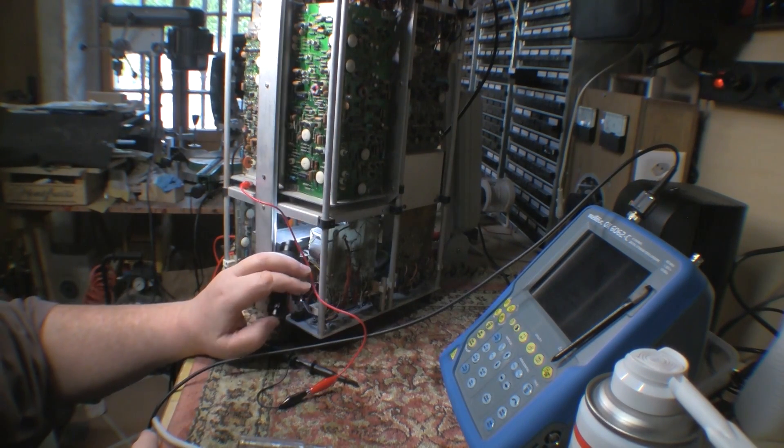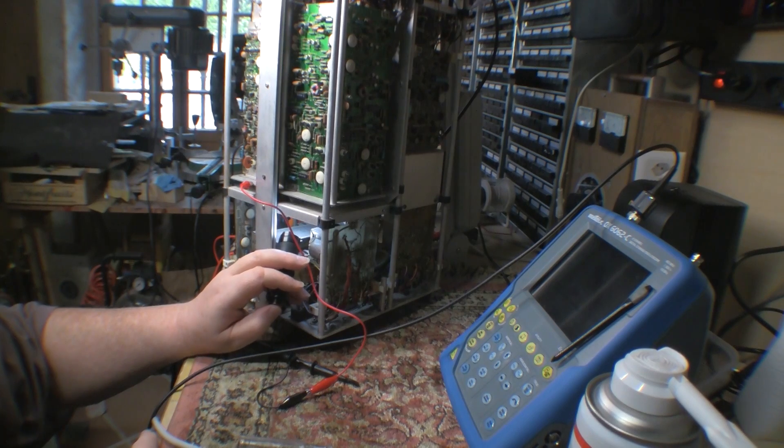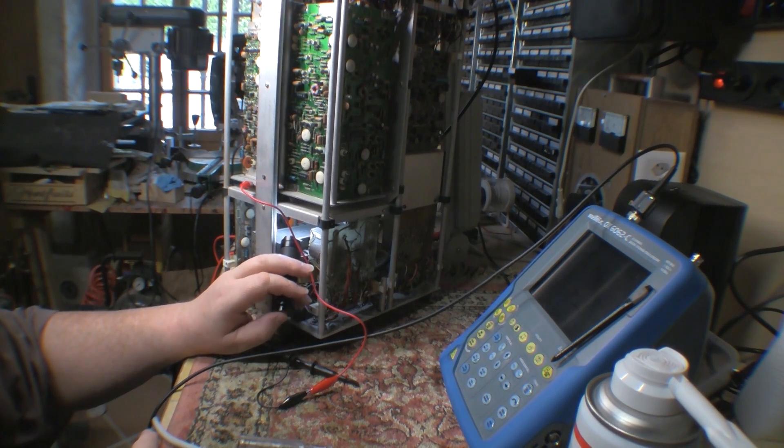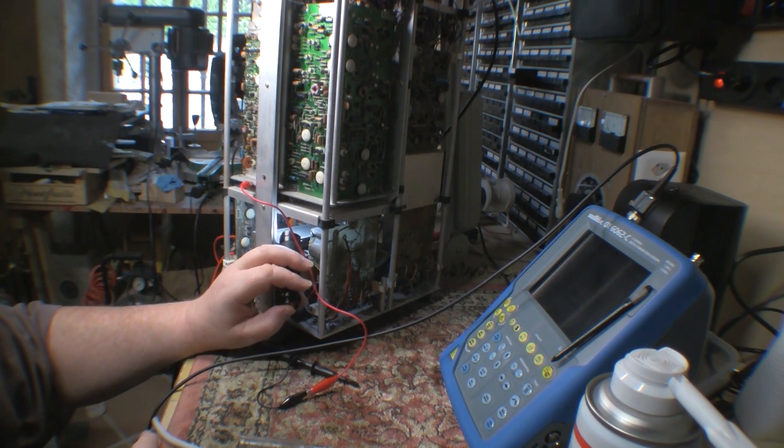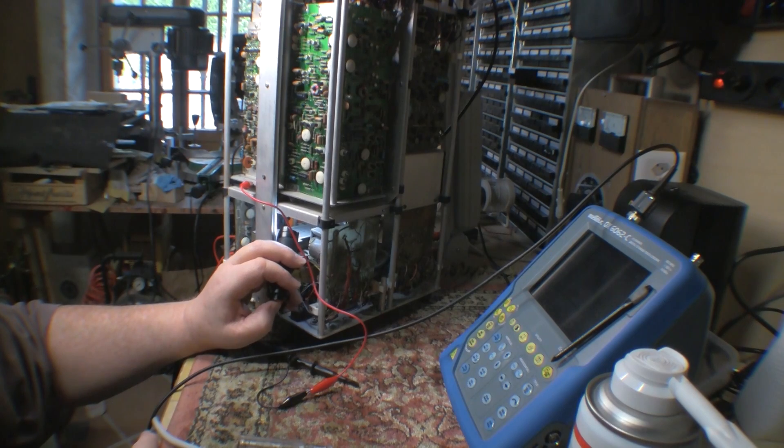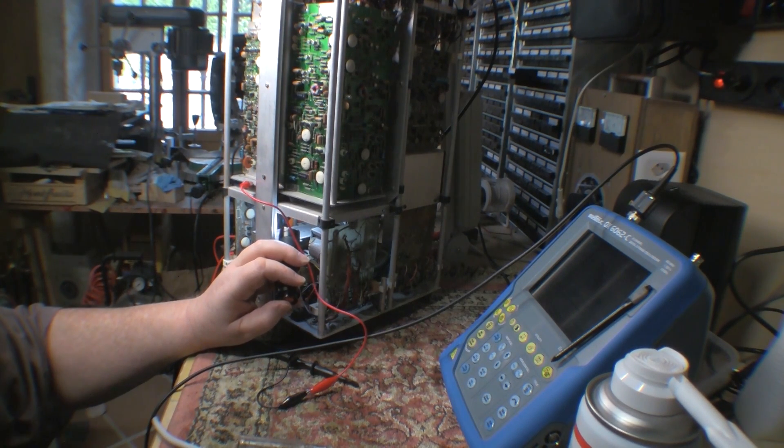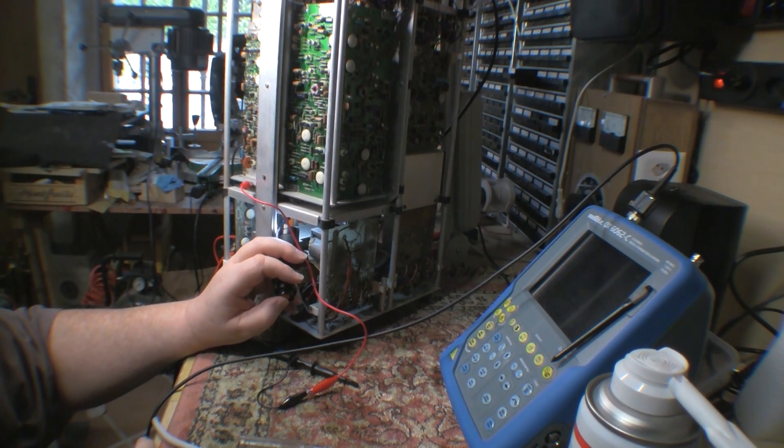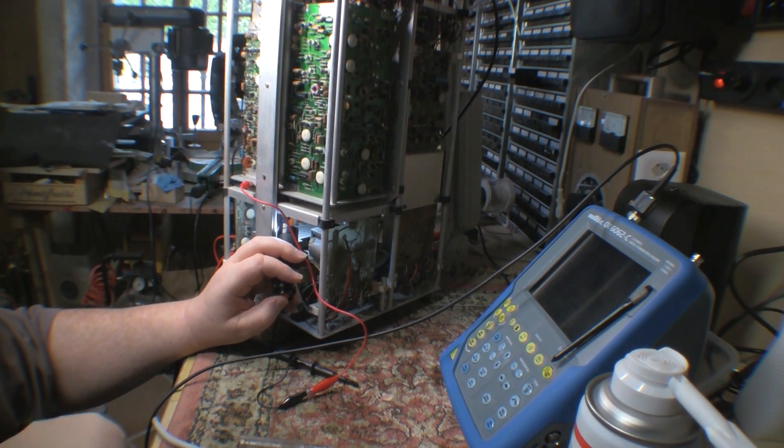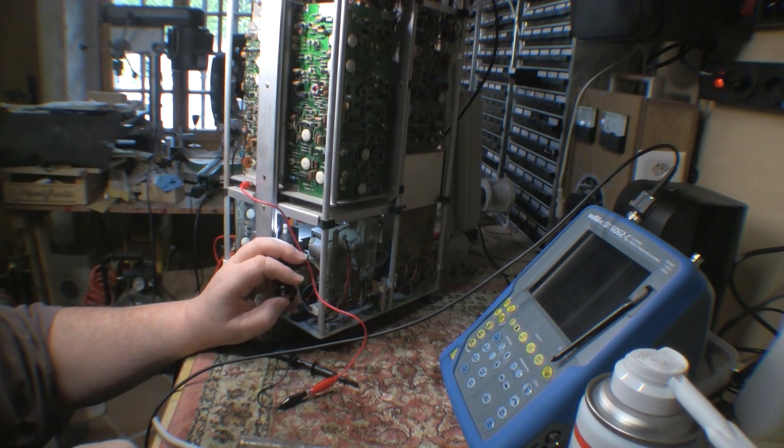However, what I did find is there are two large electrolytics that are actually mounted on the back plane here, and they look like they decouple these outputs, and they're both bubbled, and they're fairly large electrolytics. The book says, depending on where you read the book, at one point it says 600 microfarads, and the other one says 400 microfarads. And so I think I need to replace these.